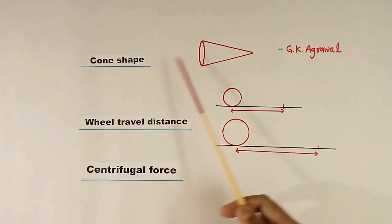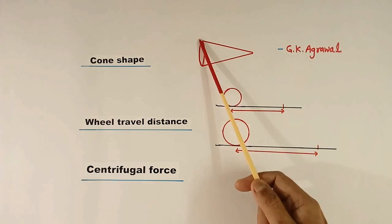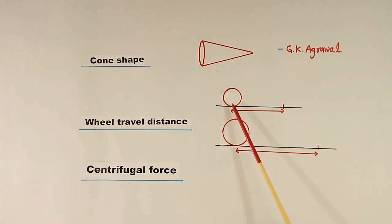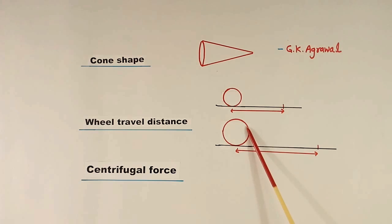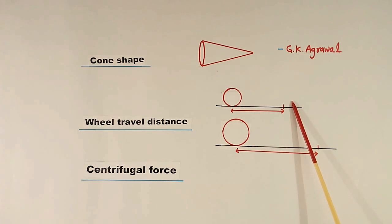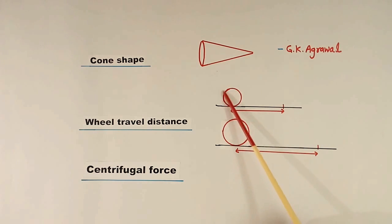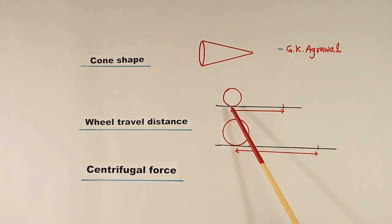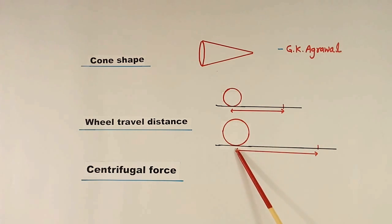What is cone shape? This shape I have shown is cone shape. What is wheel travel distance? Suppose there are two wheels — one is smaller and one is bigger, and they are moving. To take one full turn, if the smaller wheel travels a certain distance, the bigger wheel will travel longer. Smaller the wheel, it will travel less in one turn. Bigger the wheel, it will travel a longer distance in one turn.